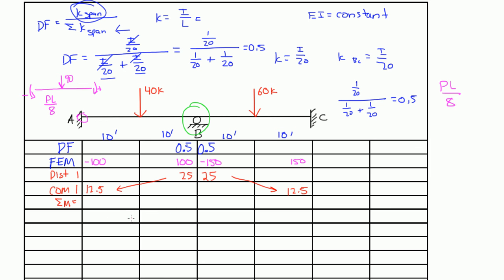The sum of moments — you sum all the moments in each respective column, and that gives you the internal moments at those specified joints. For joint A: negative 100 plus 12.5 gives negative 87.5. On the right side of A: 100 plus 25 gives 125. At the left side of B going to C: negative 150 plus 25 gives negative 125. And on the right side at C: 150 plus 12.5 gives 162.5. Since the moments at B are equal and opposite, we're finished with our cycle.